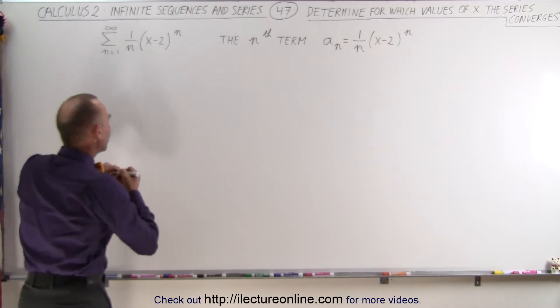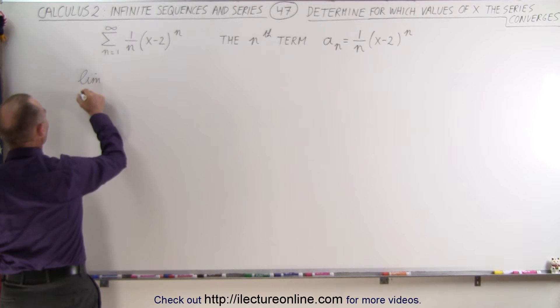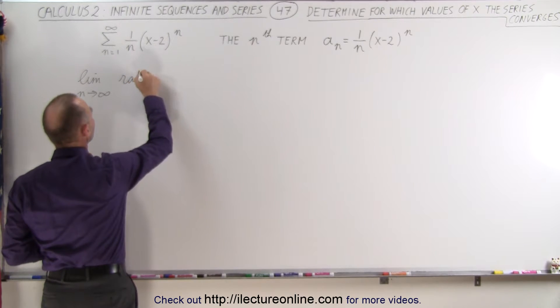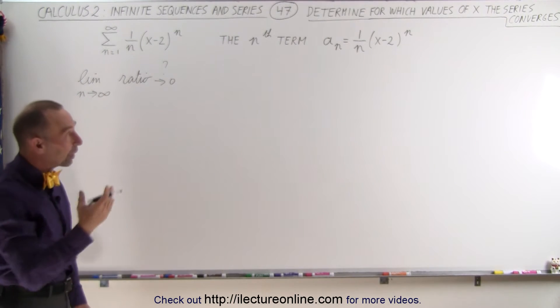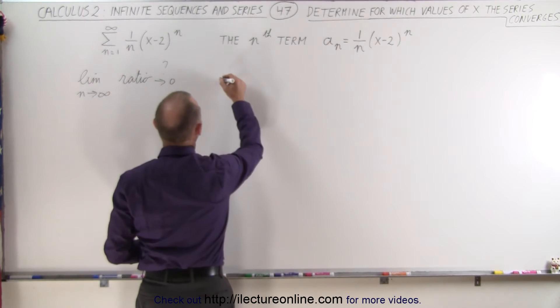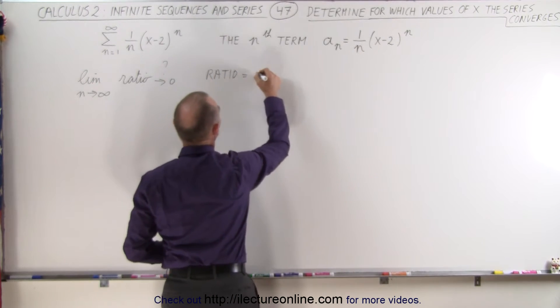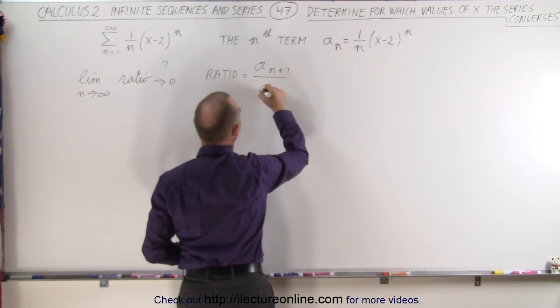So the ratio test is going to be done by saying the limit as n goes to infinity, we want to let the ratio go to 0. That's the idea. That's what we're trying to find. So let's find the ratio of this and then find the limit as n goes to infinity. So the ratio is going to be equal to a sub n plus 1 divided by a sub n.